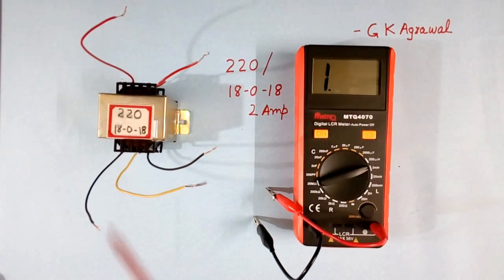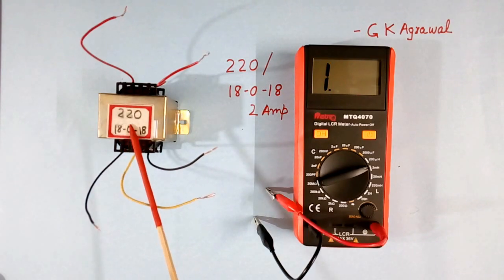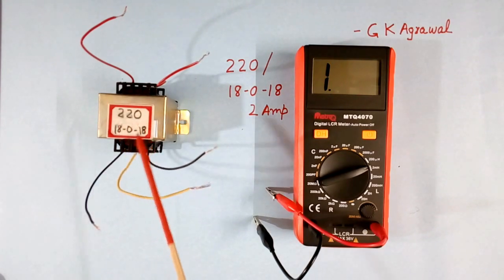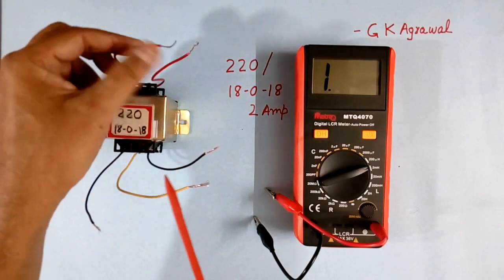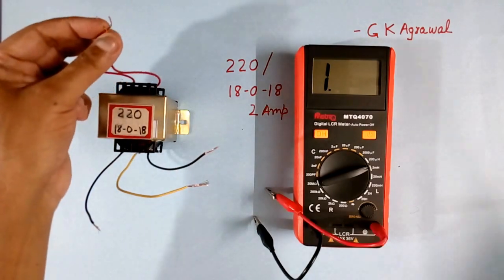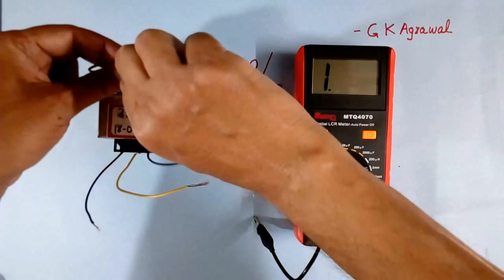Now I will convert this transformer into an inductor. What we will do? We have these two wires of the primary winding. We will short them. So I will short this.